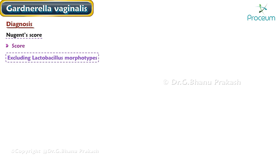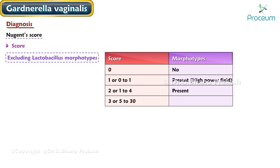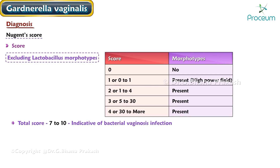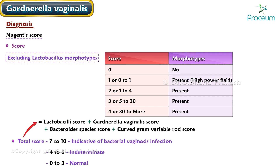Excluding lactobacillus morphotypes: a score of 0 means no morphotypes present; a score of 1 means 0–1 morphotypes per high-power field; a score of 2 means 1–4 morphotypes present; a score of 3 means 5–30 morphotypes present; and a score of 4 means 30 or more morphotypes present. A total score of 7–10 is indicative of bacterial vaginosis; 4–6 is indeterminate; and 0–3 is normal. The total score equals the sum of the Lactobacilli score, Gardnerella vaginalis score, Bacteroides species score, and Curved Gram Variable Rod score.